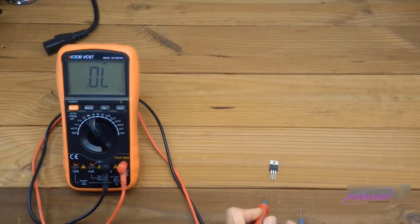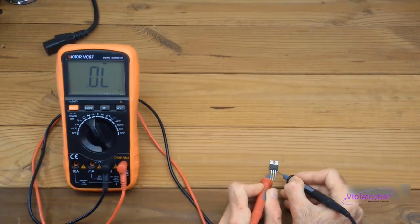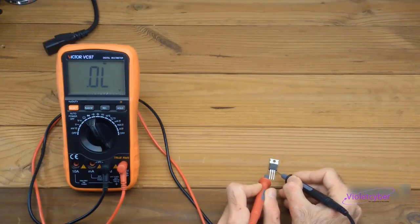The red probe always provides a small voltage to apply to components. So, by applying this small voltage to the gate, we effectively turned on the MOSFET, which allowed the source and drain pins to connect and enable current conduction.